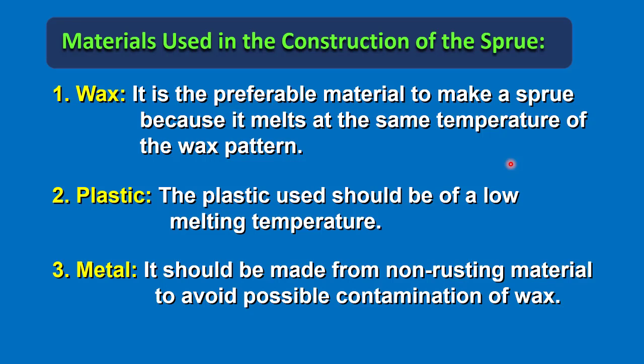Materials used in the construction of the sprue: first, wax — the preferable material — because it melts at the same temperature as the wax pattern. Second, plastic — it should be of a low melting temperature so it will burn without leaving any residue. Third, metal — it should be made from non-rusting metal to avoid possible contamination of the wax.